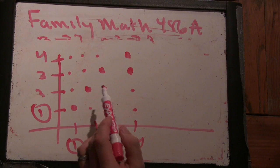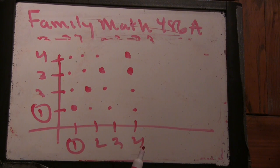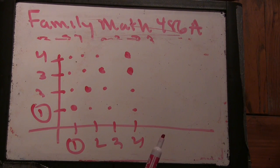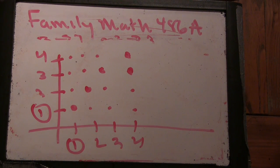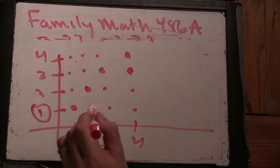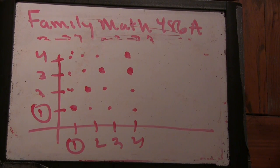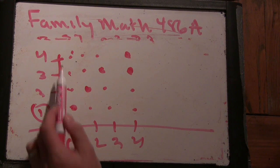So if I can show that more dots are the same size as the integers, that must mean the rational numbers are also the same size. We know the rational numbers can't be smaller than the integers, because the rational numbers contain the integers — one over one, two over one, three over one, four over one. The rational numbers contain the natural numbers, so they can't be smaller because they're inside of them.